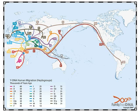Here's the paternal map, otherwise known as the Y chromosome tree — this is just how the different groups have mutated and spread all over the world, showing where you can expect to find them. One note on the paternal DNA test is that if you're female, you will not be able to get the paternal side because there's no Y chromosome involved. You would need to get a brother, your dad, or another relevant male cousin who shares the same male lineage.